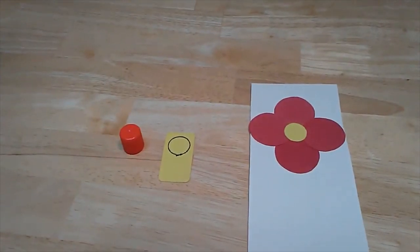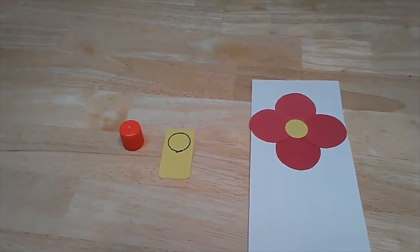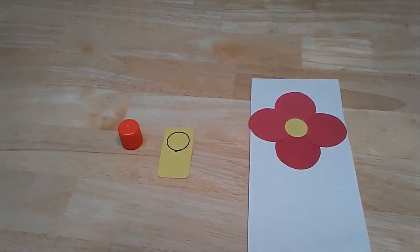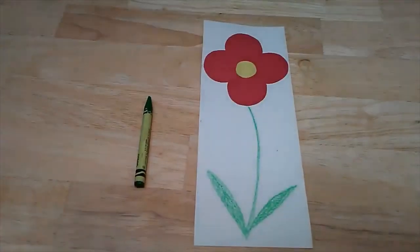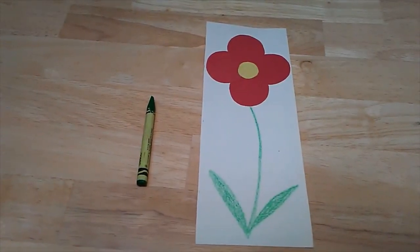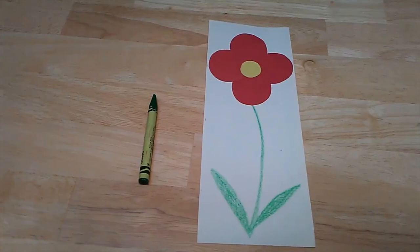Using the cap of my glue stick I traced a circle on a piece of yellow construction paper. I cut it out and glued it in the middle of my flower. Last I used a green crayon and drew the stem and the leaves for my flower.